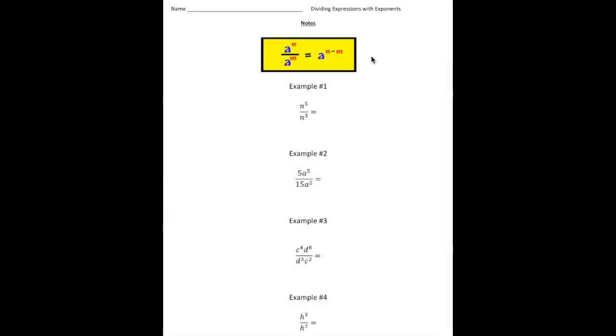Alright, so take a look at your notes here. The first thing I want you to notice is this little diagram where we have a to the n divided by a to the m. Notice the bases are the same — in this case, the bases are our a's. Let me just do one for you and see if we can catch on here.